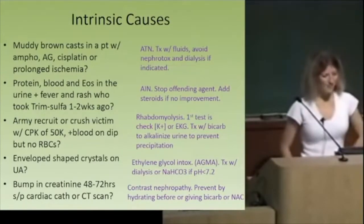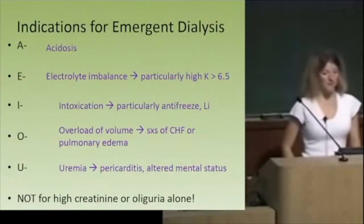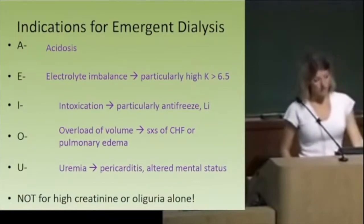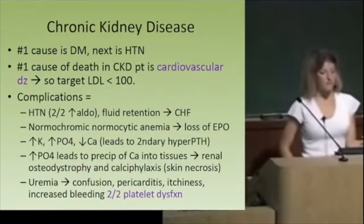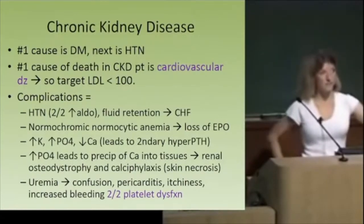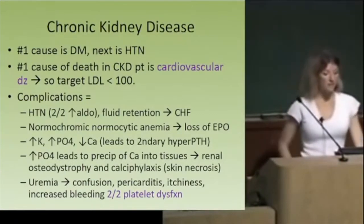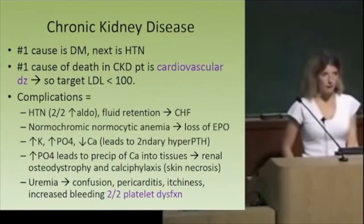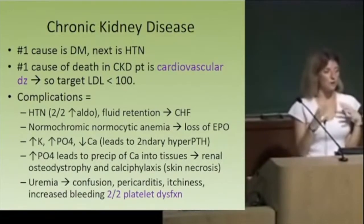For chronic kidney disease, the number one cause is diabetes, second most common is hypertension, and the most common cause of death is cardiovascular complications. Complications include hypertension causing CHF, anemia from loss of erythropoietin, electrolyte abnormalities (high potassium, high phosphorus, low calcium), and secondary hyperparathyroidism. The low calcium triggers the parathyroid gland to ramp up PTH. Also notable: uremia from CKD causes platelets not to clot properly, putting patients at increased risk of bleeding after surgery.